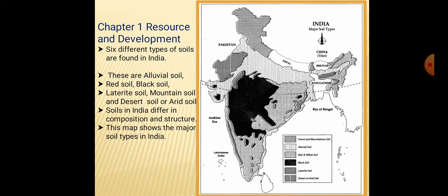Soils in India differ in composition and structure. This map shows the major soil types in India. The black color shows black soil, vertical lines show alluvial soil, and horizontal lines show mountainous soil. Orissa, Telangana or Andhra Pradesh, Tamil Nadu, and Kerala have square-type lines showing red and yellow soil.